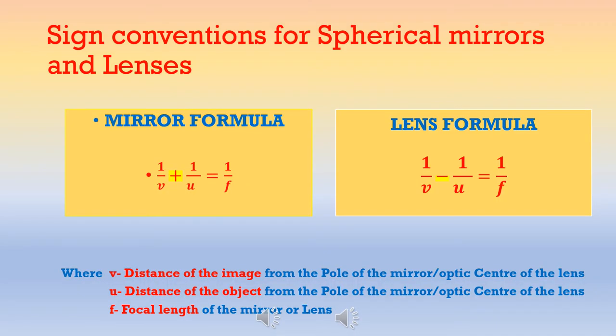First, let us remember the mirror formula: 1/V + 1/U = 1/F, and the lens formula: 1/V - 1/U = 1/F, where V is the distance of the image, U is the distance of the object, and F is the focal length of the mirror or lens. The distances of the object and image are measured from the pole of the mirror or the optical centre of the lens.